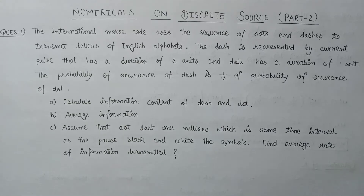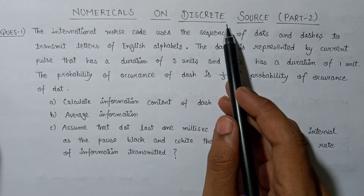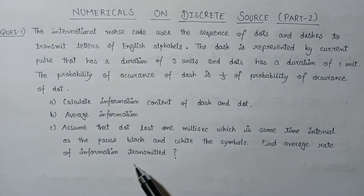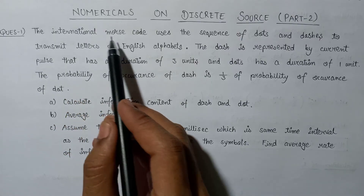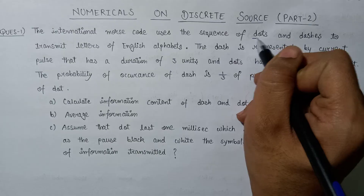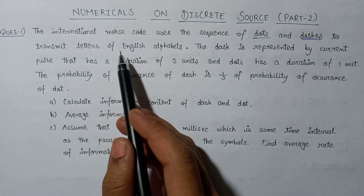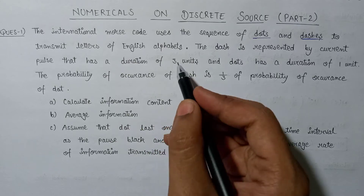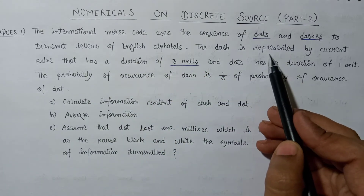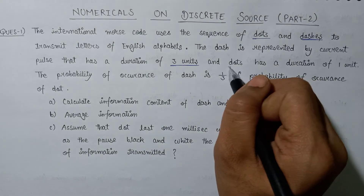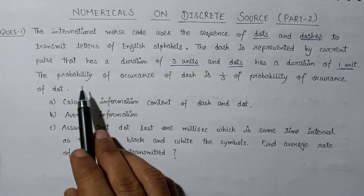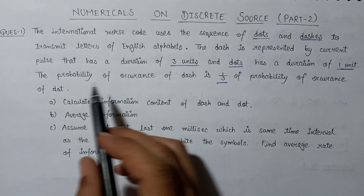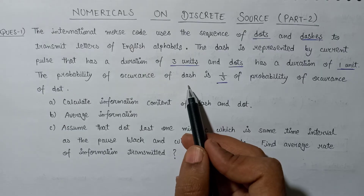Hi everyone. In this lecture we are going to solve one more numerical based on discrete source. This is the second video of numericals based on discrete source. The question involves international Morse code which uses a sequence of dots and dashes to transmit letters of the English alphabet. The dash is represented by a current pulse having the duration of three units, and the dot has a duration of one unit. The probability of occurrence of dash is one-third of the probability of occurrence of dot.